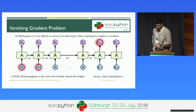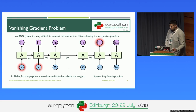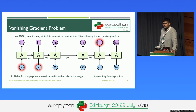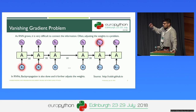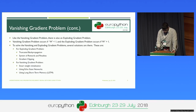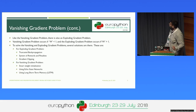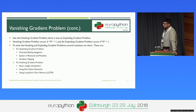Likewise, we have the exploding gradient problem. The exploding gradient problem occurs when the value of W is greater than 1. If you multiply a number by a factor greater than 1 simultaneously many times, it will tend to explode to very large values. So the vanishing gradient problem is when W is less than 1, and the exploding gradient problem is when W is greater than 1.